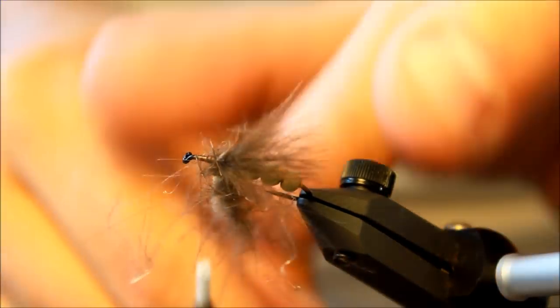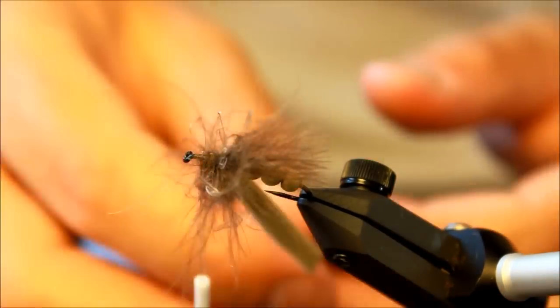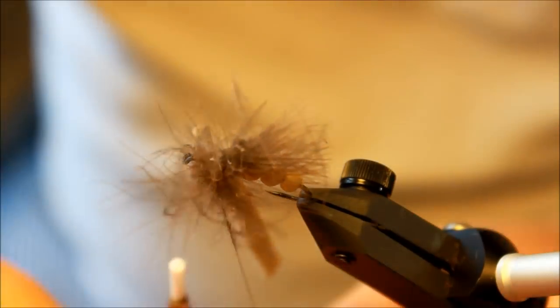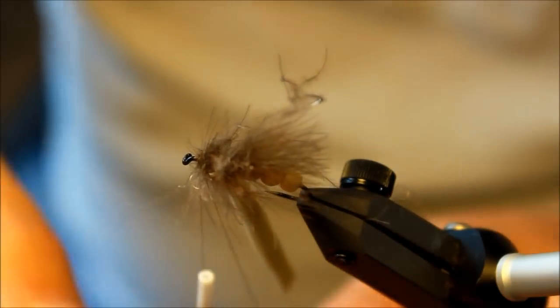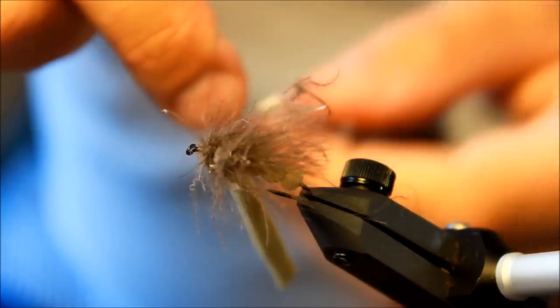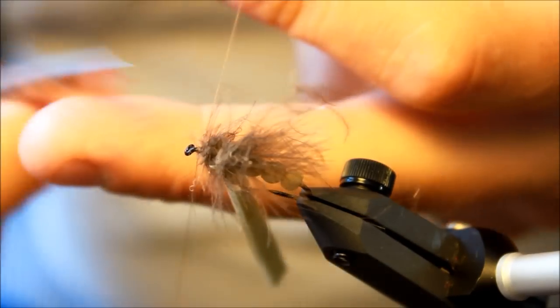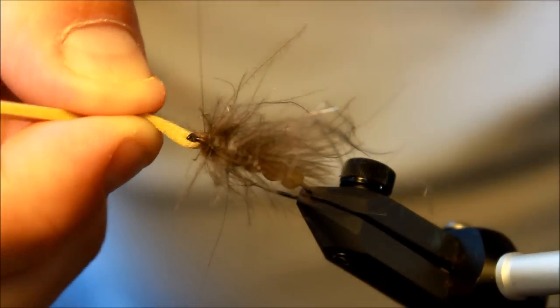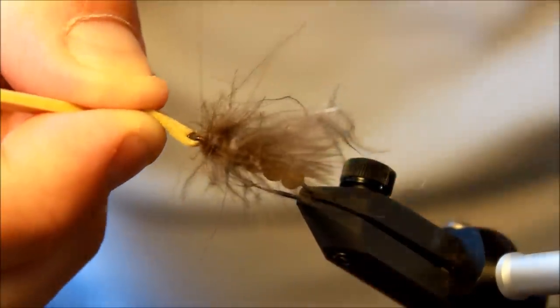That one there is a bit too big. Keep everything pointed backwards so that everything is under control. Fastening the dubbing loop. And what I do is I take this foam and pull it before tying it down. Like that.